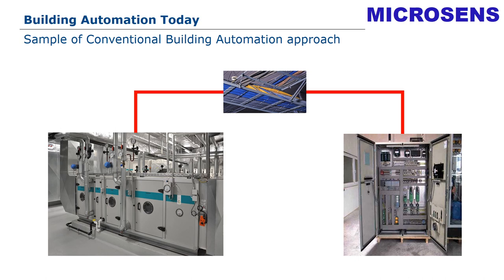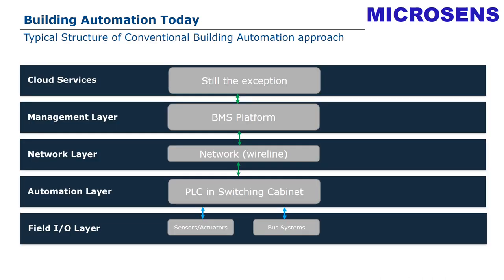To analyze the structure of our sample, the ventilating unit, we can transfer it into a layer model for a conventional automation system. You see the different layers. We start from the bottom one, which is the field and IO layer. In this layer, we find all the sensors, actuators, and bus systems for collecting all physical information directly from the field.